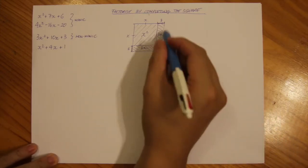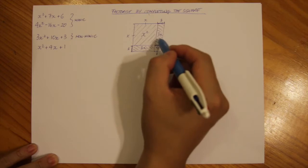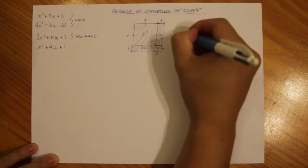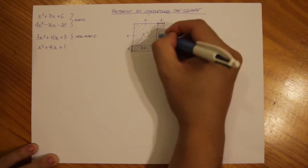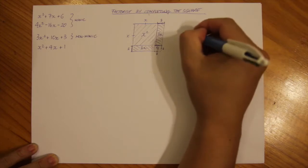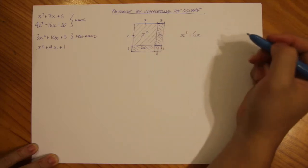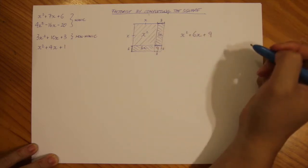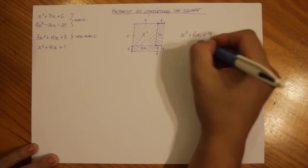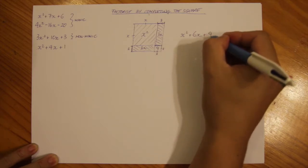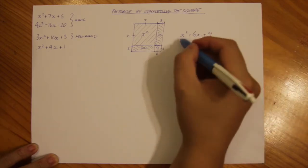Now I've got one big square. If we add up all the components to find the area of this whole square, we'll have x squared plus 3x plus 3x — so two of these 3x's make 6 — and then the last little addition is 9. If you factorise this as a perfect square, you'll have x plus 3 times x plus 3, so x plus 3 squared.